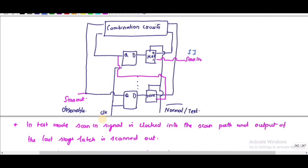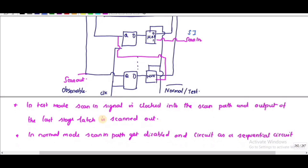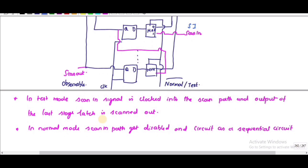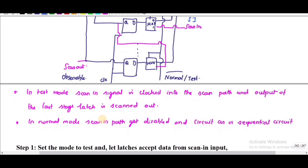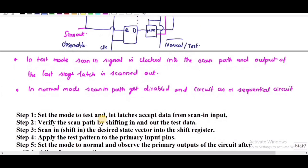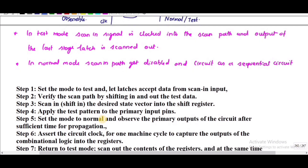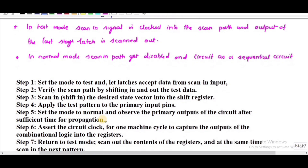In test mode, the scan-in signal is clocked into the scan path and the output of the last stage latch is scanned out. In normal mode, the scan path stabilizes and the circuit acts as a sequential circuit. Let us now discuss the procedure.